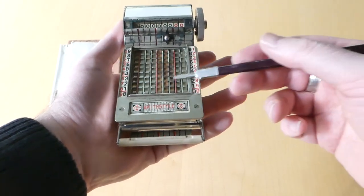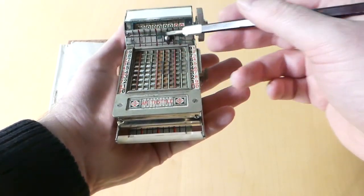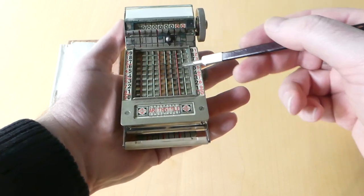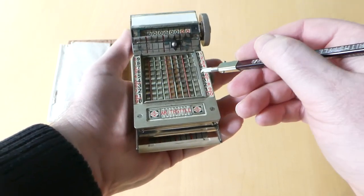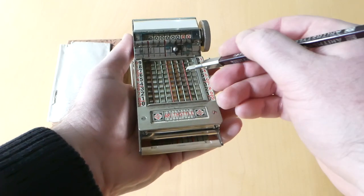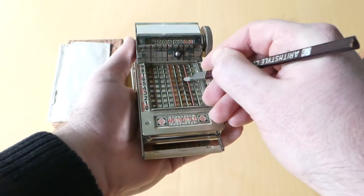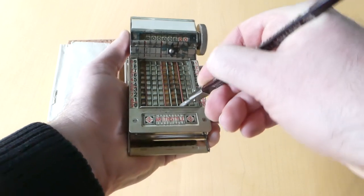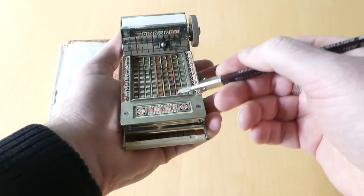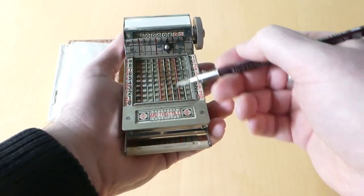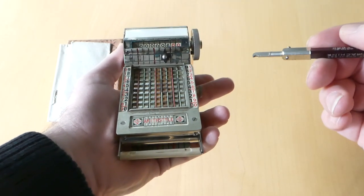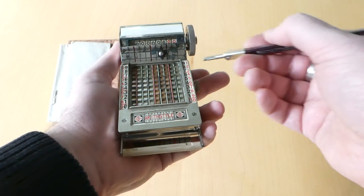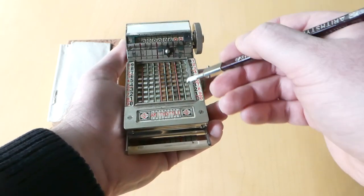It's a chain adder with a nine-digit register and nine chains. With the stylus, you can put it in one of the chain links, push it down and pull it towards you, and that adds the digit to the digit in the register. Of course, it has an automatic carry mechanism.